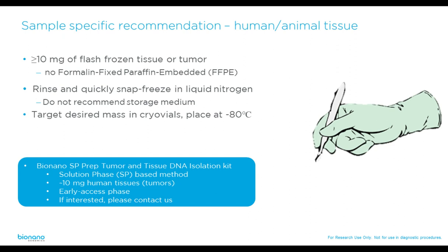We have early access kits and workflows available for human and animal tissue. We see good results with 10 milligrams and up of flash-frozen tissue or tumor. FFPE samples are not adequately preserved and won't work on our platform. Once the desired mass of tissue is harvested, rinse it and snap-freeze in liquid nitrogen upon harvest — no storage medium needed. Cap the tube and handle on dry ice until the sample can be transferred to minus 80°C. This is supported by the BioNano SP Prep Tumor and Tissue DNA Isolation Kit.